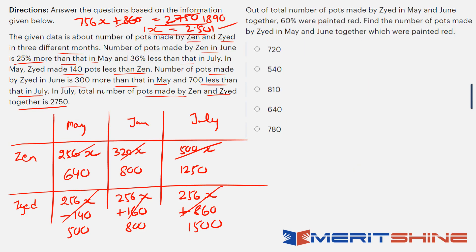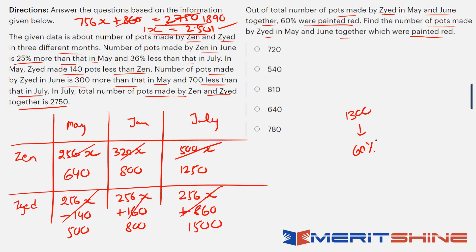Third question: 60% of pots made by Zayad in May and June together were painted red. Zayad's May is 500, June is 800, total is 1300. 60% of 1300 equals 780 pots painted red.